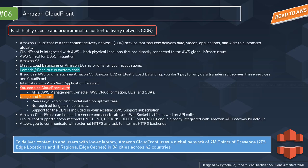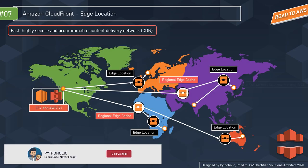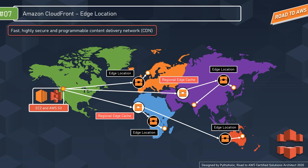With CDN, we place proxy servers closer to customers to cache frequently accessed static files. In CloudFront, these proxy servers placed close to customers are called edge locations. An edge location is where end users access AWS services — located in most major cities around the world and specifically used by CloudFront to distribute content to end users to reduce latency.